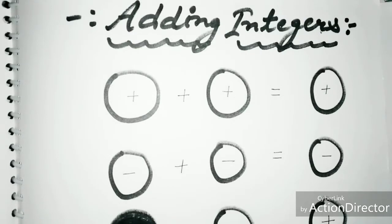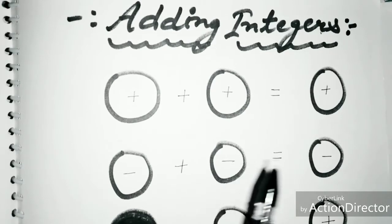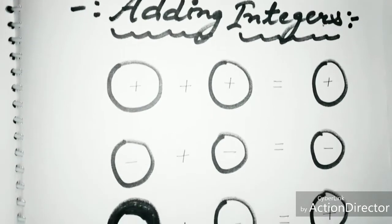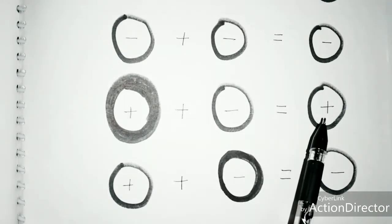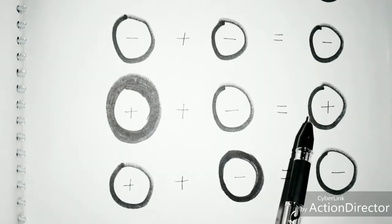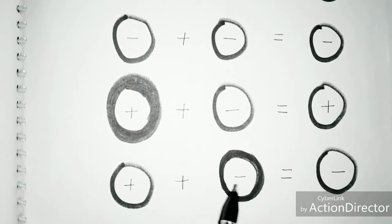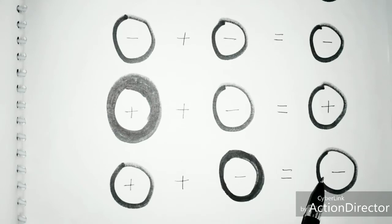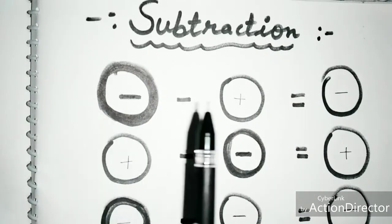When adding integers with different symbols: plus plus plus gives plus, and minus plus minus gives minus. Plus plus minus gives plus because the number with the positive symbol is greater. Plus plus minus gives minus because the number with the minus symbol is greater, so we put the minus symbol before the difference.